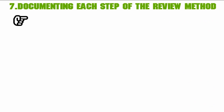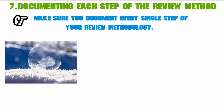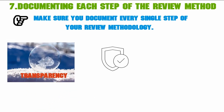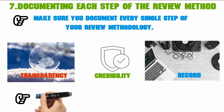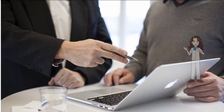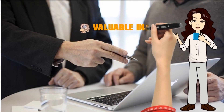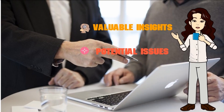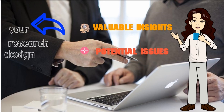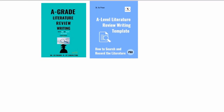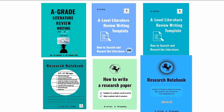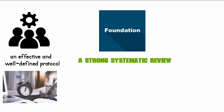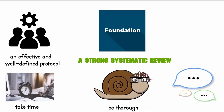Step 7: documenting every single step of your review methodology. This is crucial as it adds transparency and credibility to your work. By keeping a record of everything you do, you'll make it easier for others to reproduce your review and verify your findings. It's always wise to consult experts when developing a protocol — they can provide valuable insights and help you resolve potential issues in your research design. Creating an effective and well-defined protocol is the foundation of a strong systematic review, so take your time, be thorough, and consult with others to ensure you're on the right track.